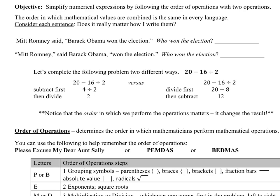The order in which mathematical values are combined is the same in every language. Consider this example: 'Mitt Romney said: Barack Obama won the election' versus 'Mitt Romney said Barack Obama won the election.' Who won the election? From the first, it's Barack Obama speaking — Mitt Romney said it. In the second, the punctuation shifts meaning. The same exact words, spoken or punctuated differently, will change who we think won the election.